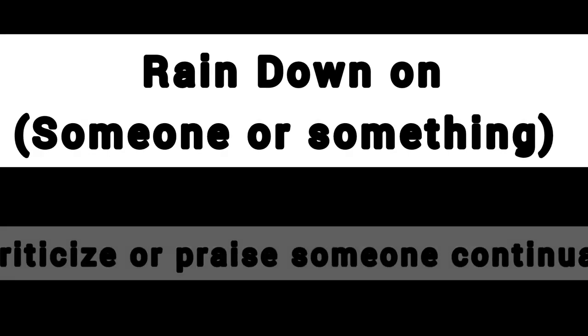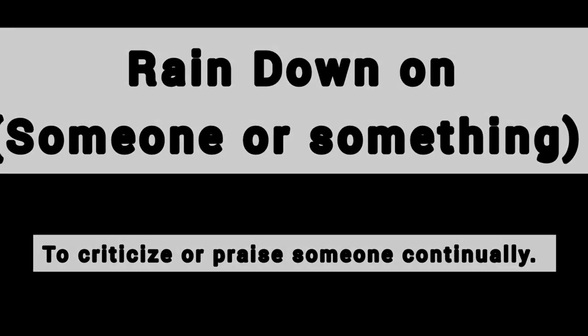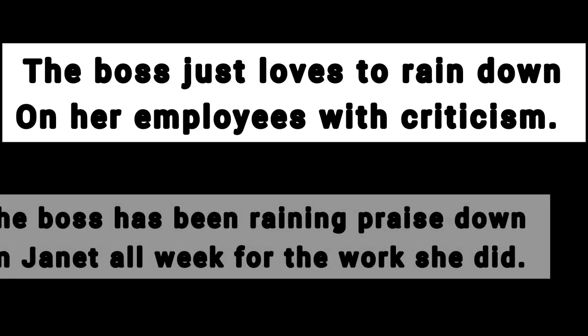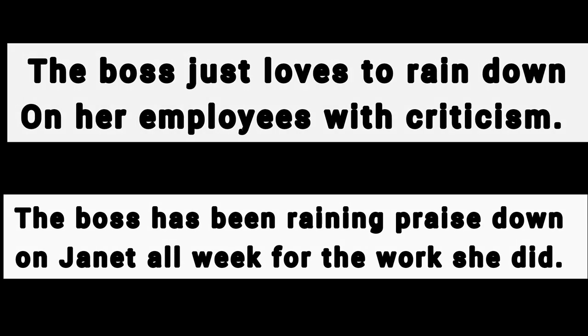The next expression is 'rain down on someone or something,' which means to criticize or praise someone continually — it can be used in both ways. For example, for criticism: 'The boss just loves to rain down on her employees with criticism.' The exact opposite: 'The boss has been raining praise down on Janet all week for the work she did.' This is how you can use 'rain down.'